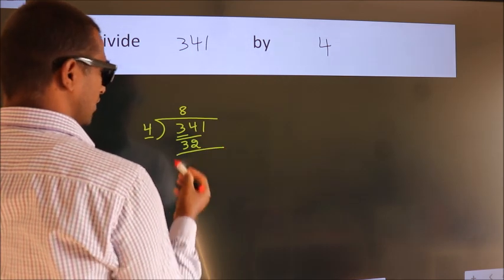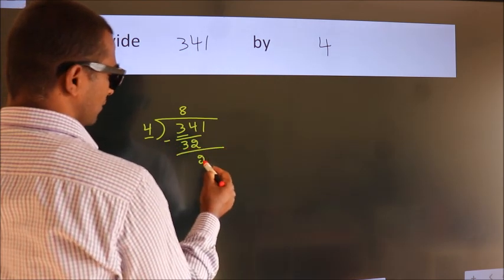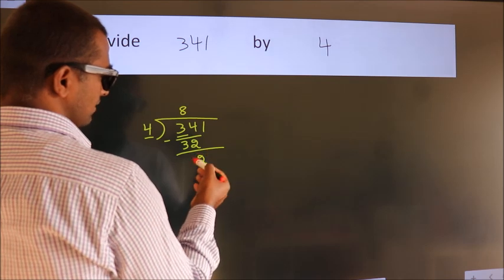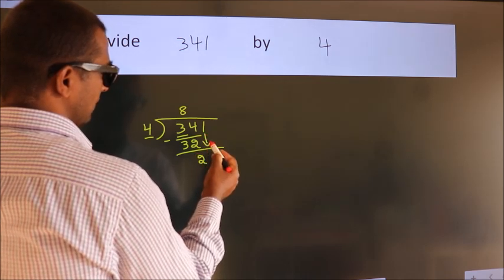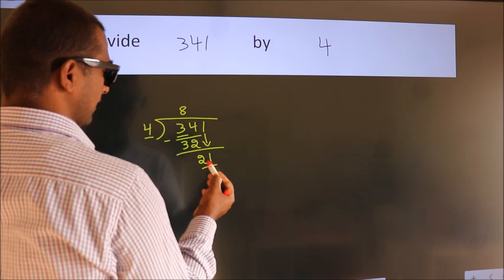Now we should subtract. We get 2. After this, bring down the beside number. So 1 down, so 21.